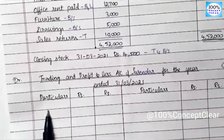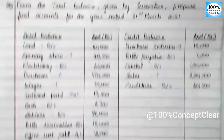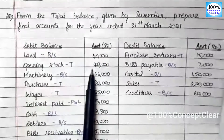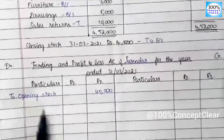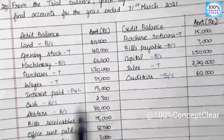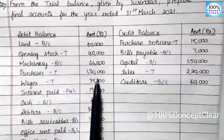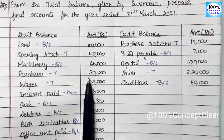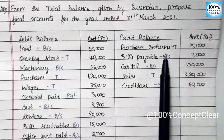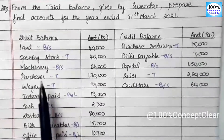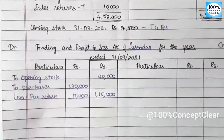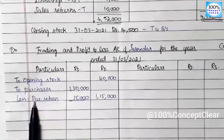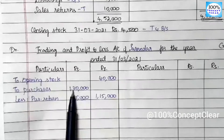First, in the trading account we have opening stock. Opening stock is $40,000, so we note that. After opening stock, we have purchases. Purchases are $1,30,000, so we note that.